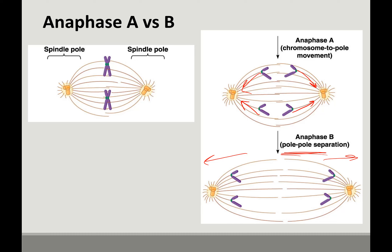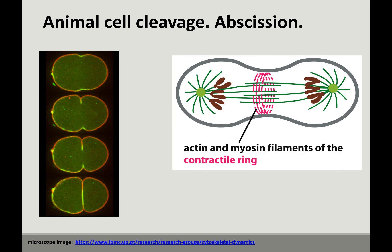To summarize the stages: interphase is all about making the cell larger and replicating the chromosomes. Prophase is about condensing the chromosomes so they don't get tangled up like a ball of yarn. Metaphase is about lining them up. Anaphase is about breaking the sisters apart. Telophase is about making new nuclei. Abscission is that final separation of the daughter cells — also called cytokinesis, where we split the cytoplasm. Cytoskeleton components are involved: actin and myosin filaments make a contractile ring like a belt, tightening until the cell splits in two.